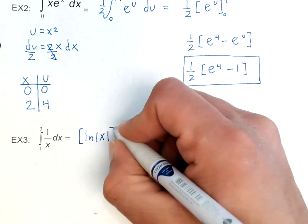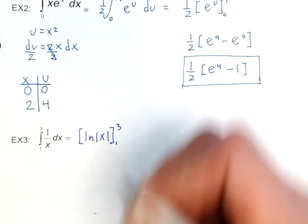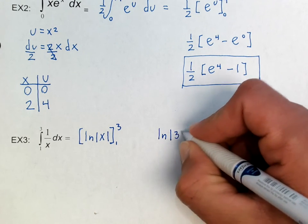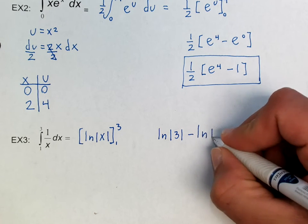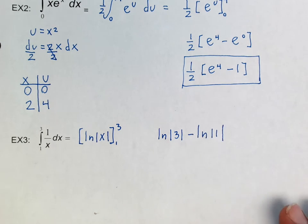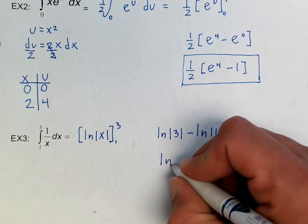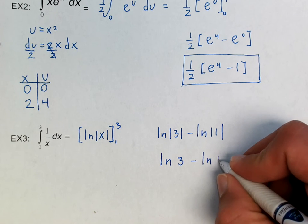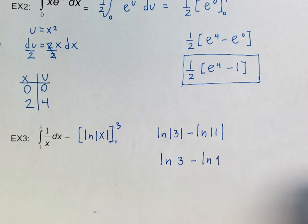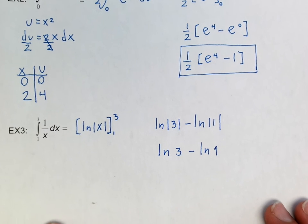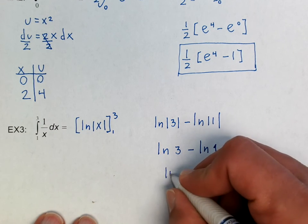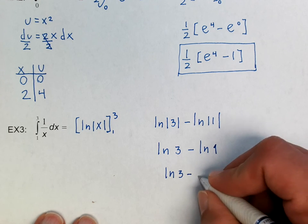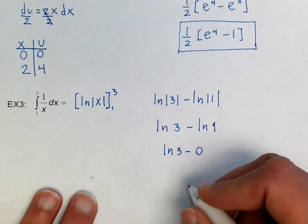And now I'm just going to try to evaluate this between 1 and 3. So now I have the natural log of 3, absolute value of 3, the natural log of the absolute value of 1. Now, remember that the absolute value of 3, well, that's just going to be 3. So I can just write it like this. And the absolute value of 1, well, that's just 1. Now the natural log of 1 is 0. So the answer is just the natural log of 3. Not too bad.